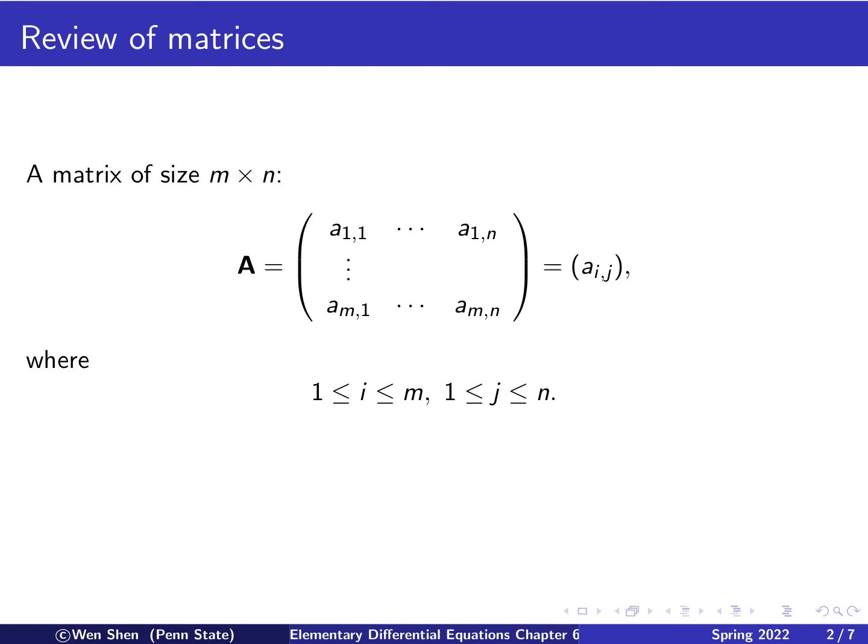In this video, we'll do some review of matrices. A matrix of size m times n is a rectangular collection of mn values in the following way. Let's call the matrix capital A, and we arrange it in this way with elements A11, A12, all the way to A1n, so n columns here.